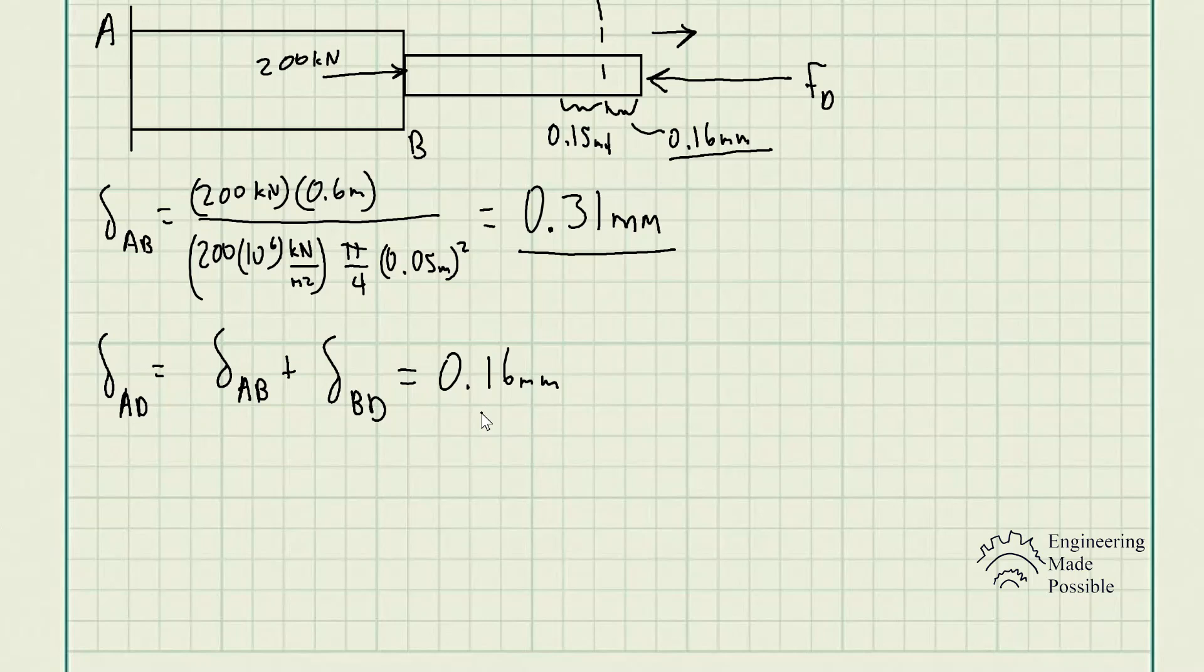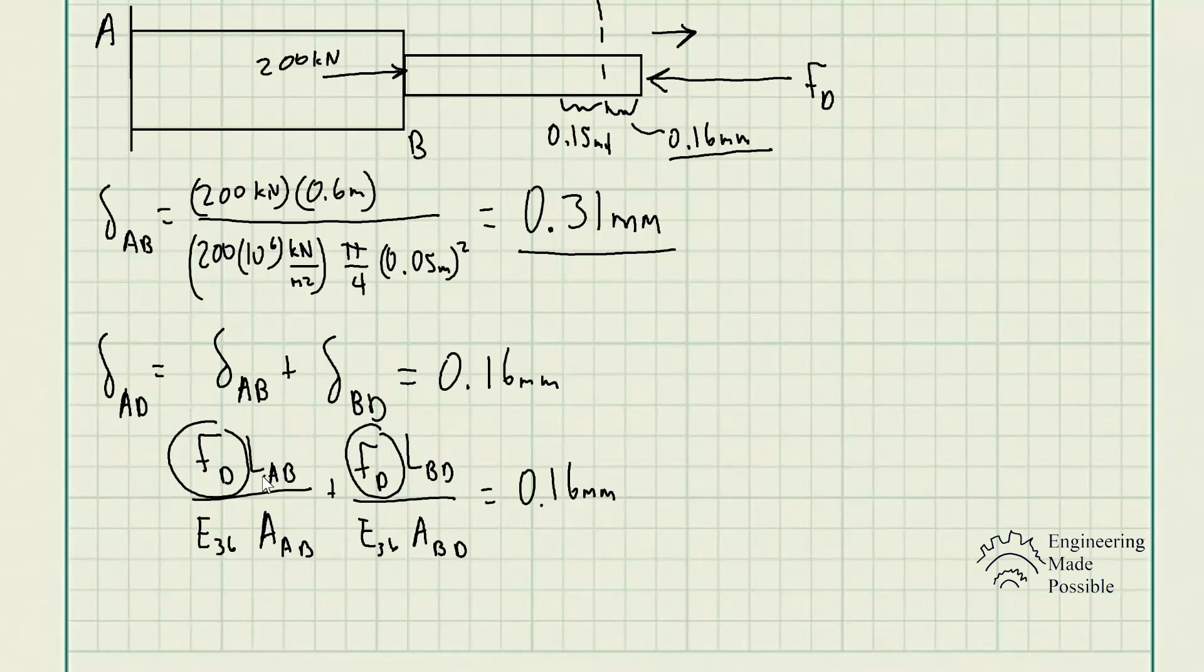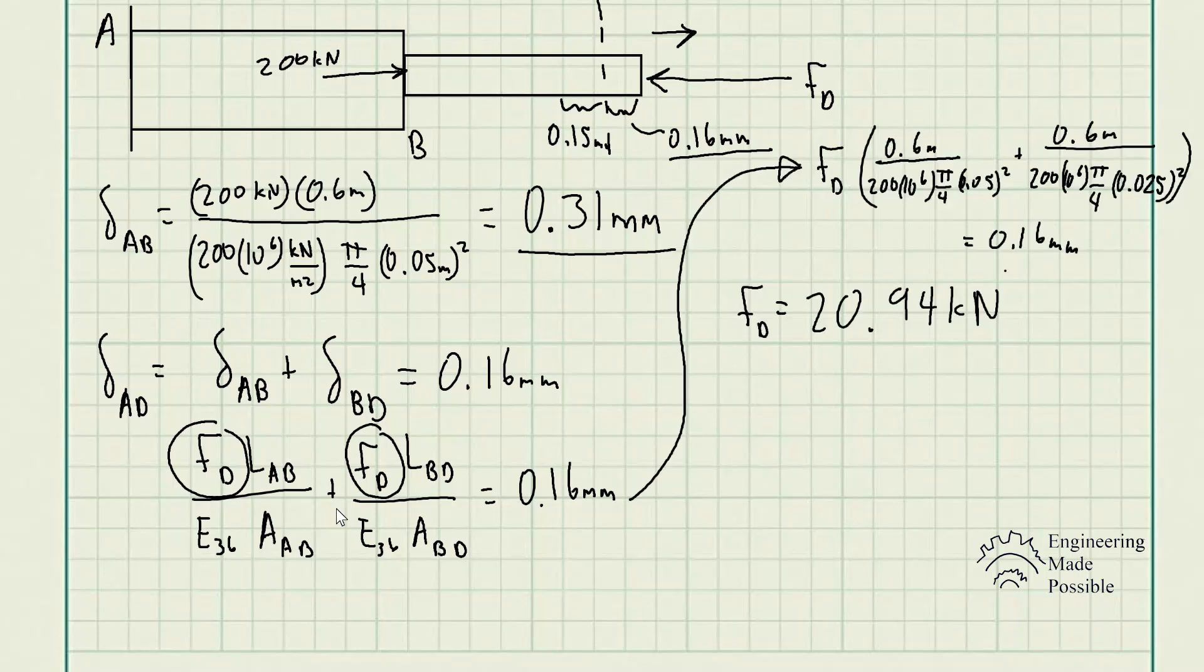With these equations, we have the unknown FD, which we could just factor. And we have the original lengths of the rods AB and BD, as well as the rest of the information to solve. Let's plug in all the values, factor out FD, and then solve for it accordingly. Finally, we get our reactionary force FD being equal to 20.94 kilonewtons.